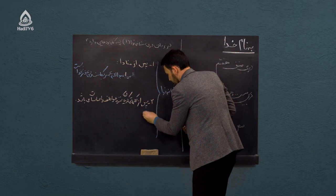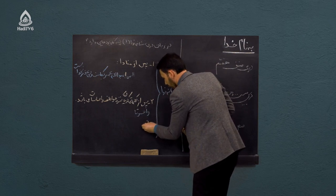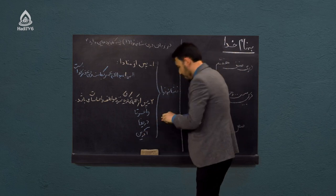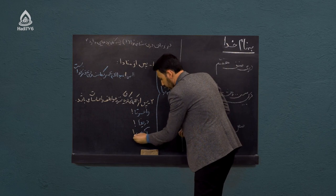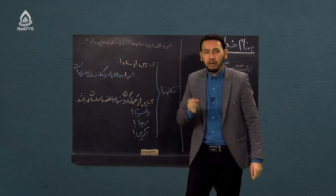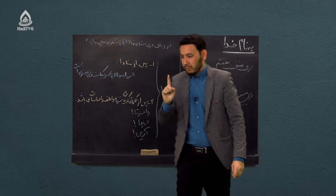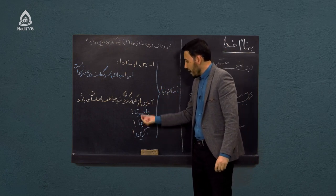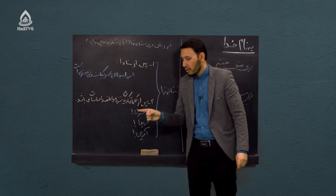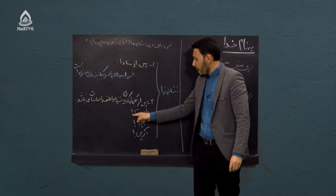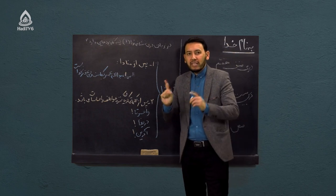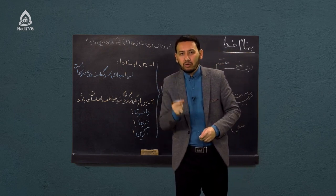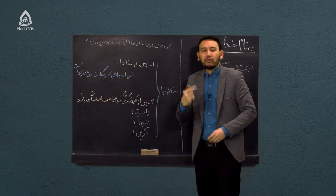بعد از کلماتی مثل واحسرتا، دریغا، آفرین نشانه ندا را ذکر می‌کنیم. البته یک نکته مهم: هر زمانی که این کلمات بیان‌کننده حس، عاطفه و تأثرات ما باشند، اگر بعد از علامت ندا هیچ ادامه جمله‌ای ذکر نشود نشانه ندا همانجا می‌آید. اگر جمله‌ای ذکر شود، ما جای نشانه ندا را تغییر می‌دهیم.